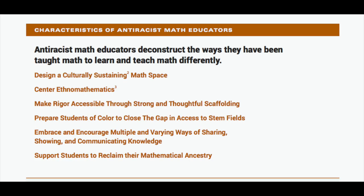It's why our educational system is pretty much broken. But it's not just for black people that the educational system is broken — it's pretty much for just anybody who goes into United States education, because all of it is just terrible, really. Students nowadays are just a byproduct of a really bad education. The document then says: 'Anti-racist math educators destruct the ways that they have been taught math to learn and teach math differently. Design a culturally sustaining math space. Center echo mathematics.' What the heck is echo mathematics?